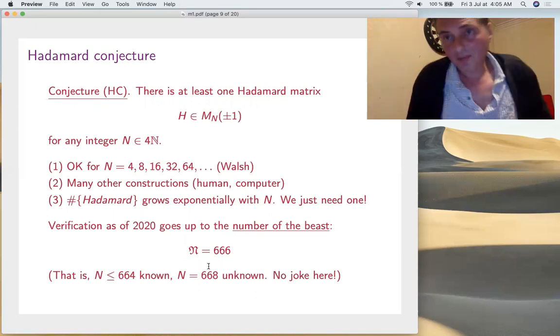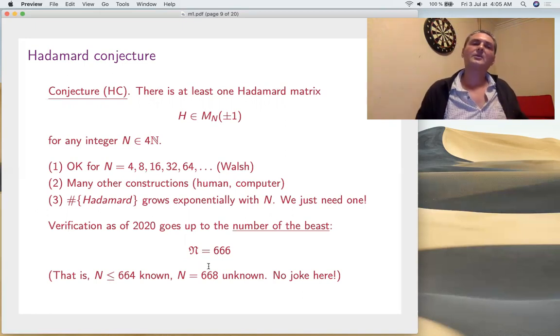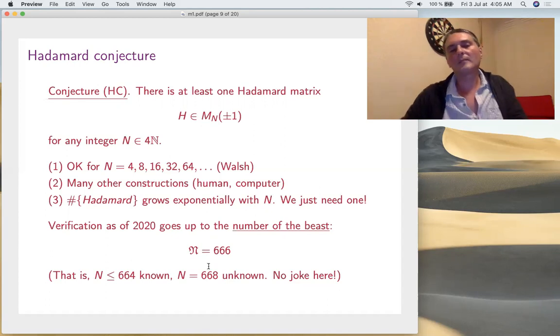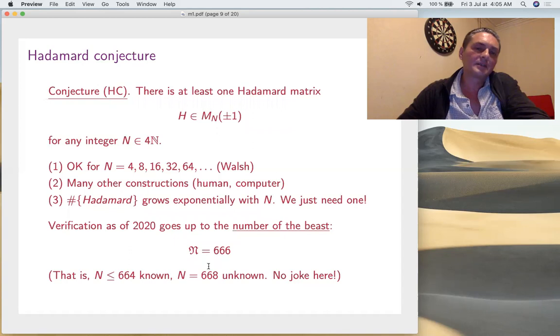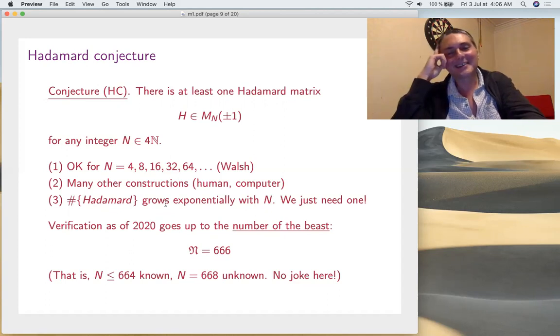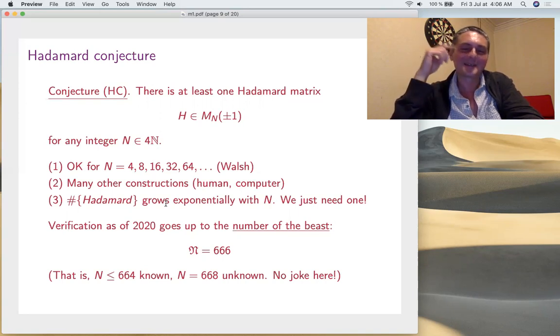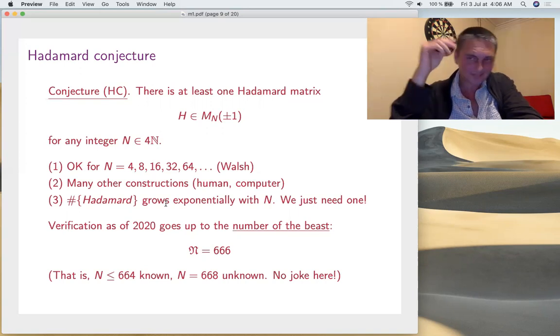Let's go to the Hadamard conjecture, which is the main purpose of today's talk. There's the conjecture: for any N multiple of four, there exists a Hadamard matrix. This is of course okay for four, eight, sixteen and so on - these are the Walsh matrices - and many other constructions by humans or by computers. The conclusion of all this construction is that the number of Hadamard matrices grows exponentially with N. It's quite surprising - we just need one for proving the Hadamard conjecture, and we are not able to do that. There's a funny thing here: as of today, verification goes up to this number of the beast, 666. That is, N equals 664 known, N equals 668 unknown - no joke here. It stops at 664 known, and 668 you don't know. Quite funny.